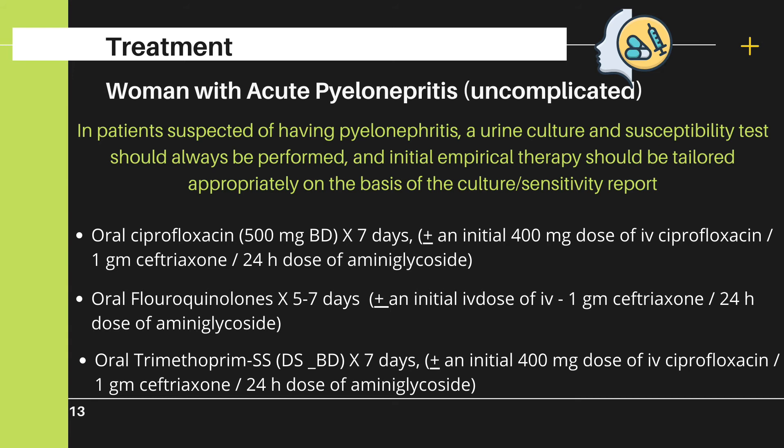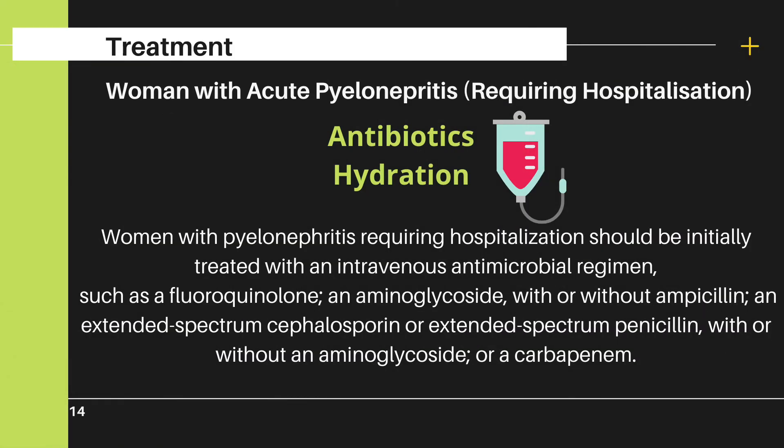The second option is other fluoroquinolones like ofloxacin and levofloxacin, or trimethoprim-sulfamethoxazole double-strength for 5–7 days. For women with acute pyelonephritis who look sick, who have high-grade temperature and require hospitalization, adequate hydration alongside IV antibiotics is also needed.